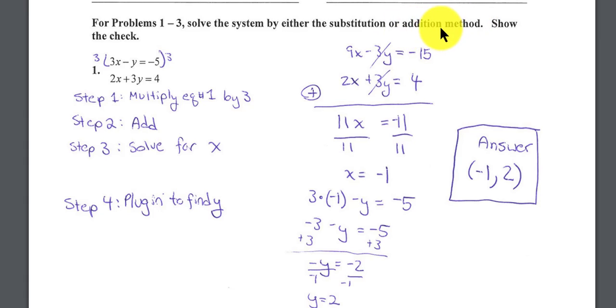Remember, the addition method is the same as the elimination method, so sometimes we refer to it as addition method, sometimes we will call it the elimination method. In this first problem, you'll notice the author of this lab decided to multiply the top equation by 3, and the reason why they chose 3 was to create opposite coefficients with the y.